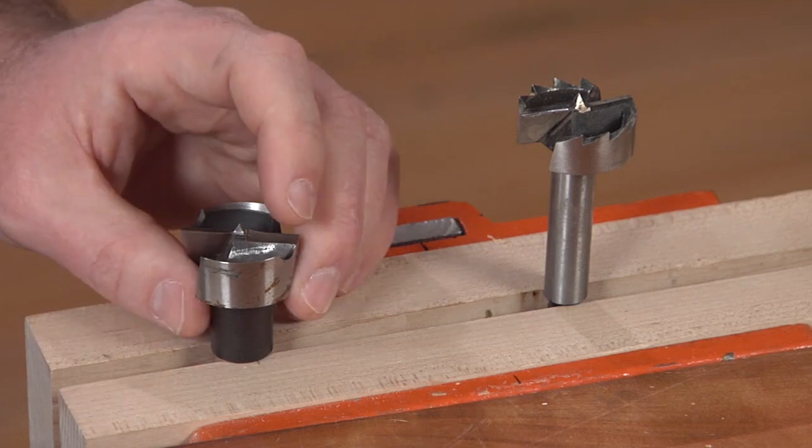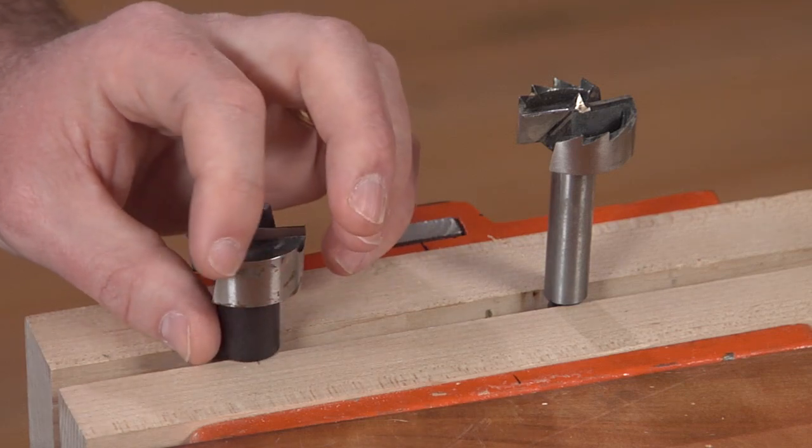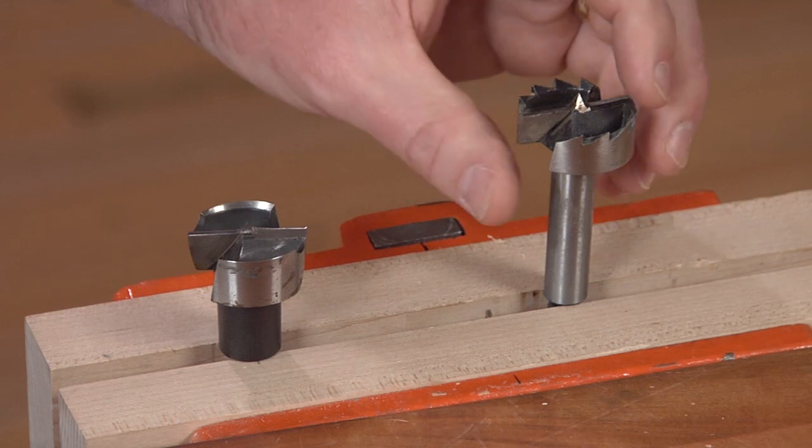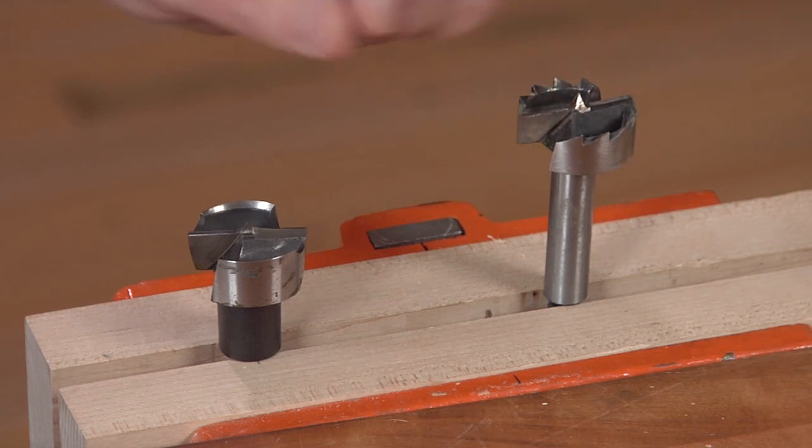There's two main types of Forstner bit, a bit with a single cutting rim, and a bit with a serrated tooth cutting rim, and you're going to use slightly different methods of sharpening for each of these.